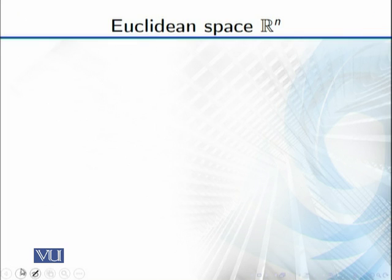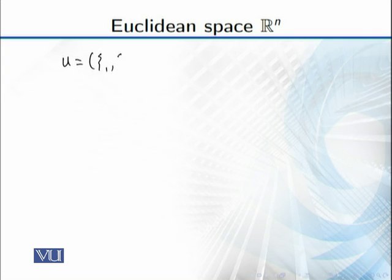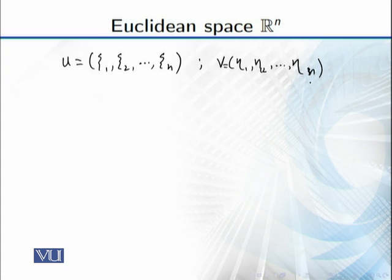Then we have Rⁿ — just as we had R², R³, and so on, we now generalize to Rⁿ. In Rⁿ the elements are n-tuples. Let's say u = (η₁, η₂, ..., ηₙ) and v = (x₁, x₂, ..., xₙ). So we have n-dimensional vectors u and v.